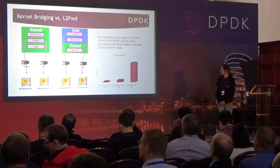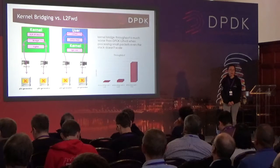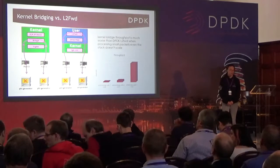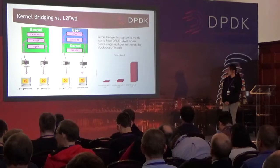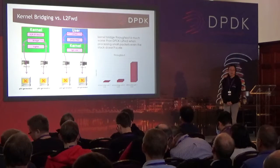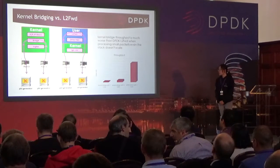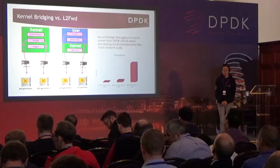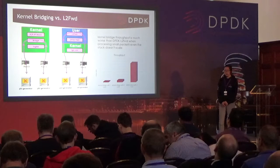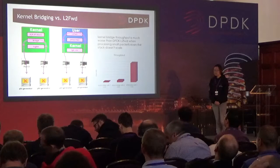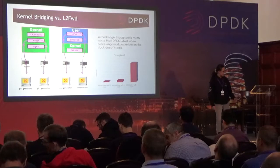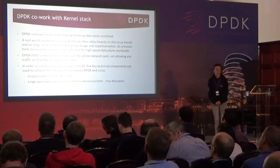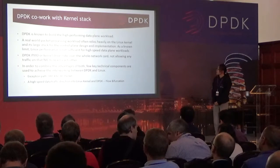As we know, the kernel can process around 1 million packets per second on one core. I did a simple comparison between kernel bridge and the DPDK L2 forward sample. DPDK L2 forward can achieve dozens of times more throughput than kernel bridge, and both occupy just one core. Even with eight cores added to kernel bridge, it only scales up about three to four times compared with one core.